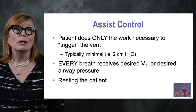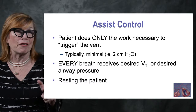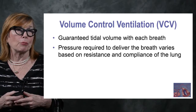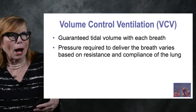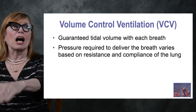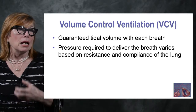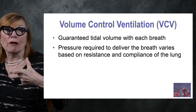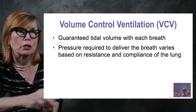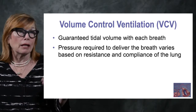In volume control ventilation, there's a guaranteed tidal volume with every breath. The pressure generated as gas flows into the lung is based on airway resistance and alveolar compliance. During an asthmatic attack, the ventilator will flow gas to the tidal volume endpoint regardless of how much pressure is generated — it will continue pushing flow to the end point of tidal volume. That's critically important when discussing ventilator strategies.